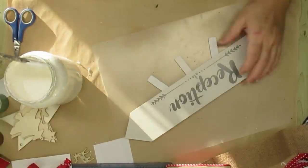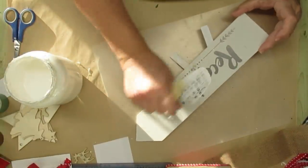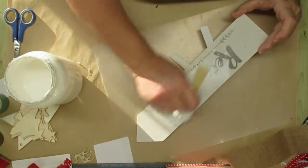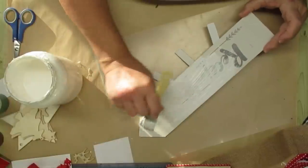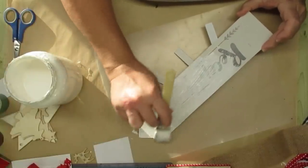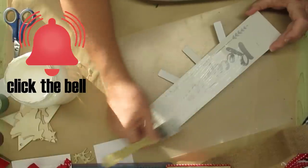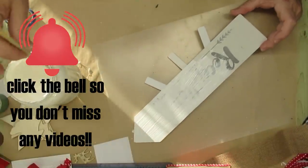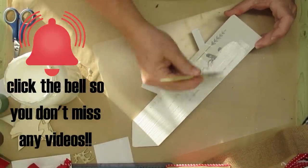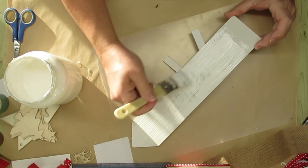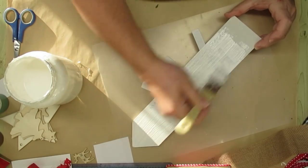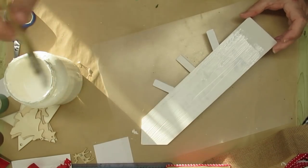Project number five is using this Dollar Tree sign. This is found in the wedding section and they normally carry these year round. Now I went ahead and I painted it a few times with my DIY chalk paint but at the end of it all you could still see the outline of those reception letters. So if you want to paint it then I would suggest doing a little bit of sanding and making it really nice and smooth.